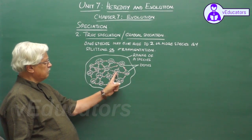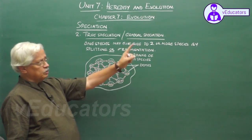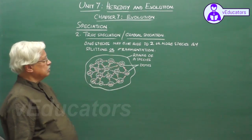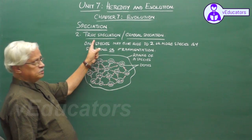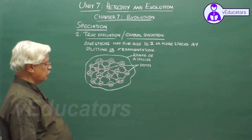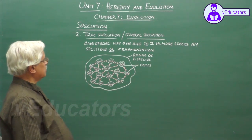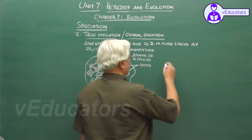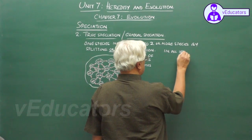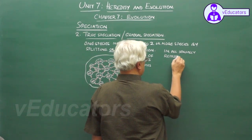But if members of one species, for some reason, split into two or more groups and give rise to new species, then it is called true speciation or gradual speciation, because it takes over a long period of time. This type of speciation occurs in all sexually reproducing organisms.